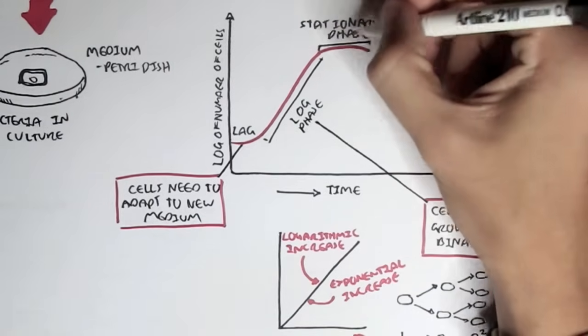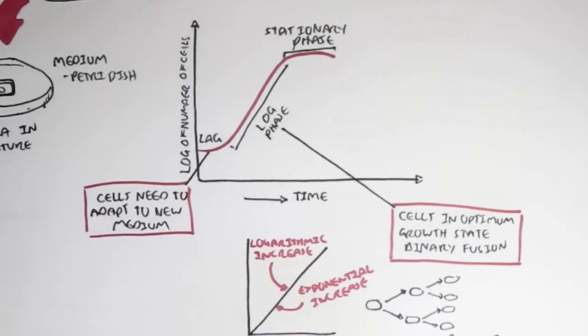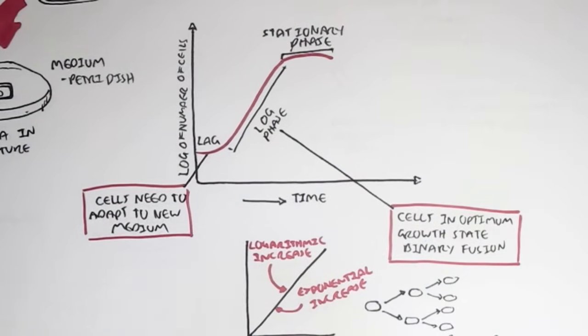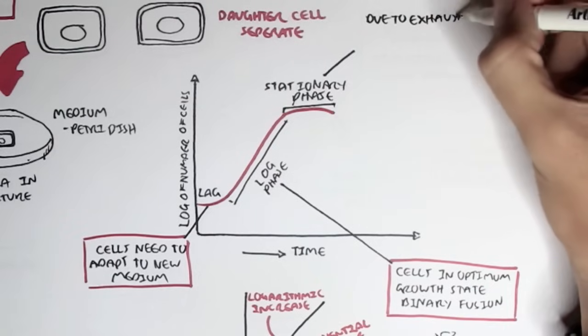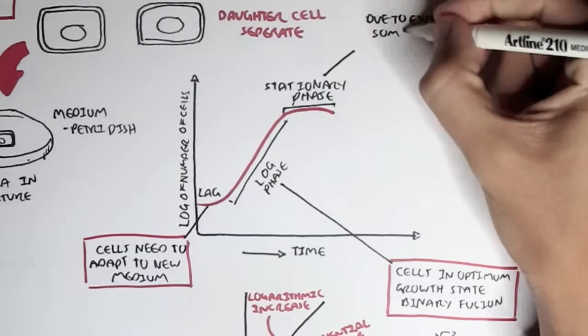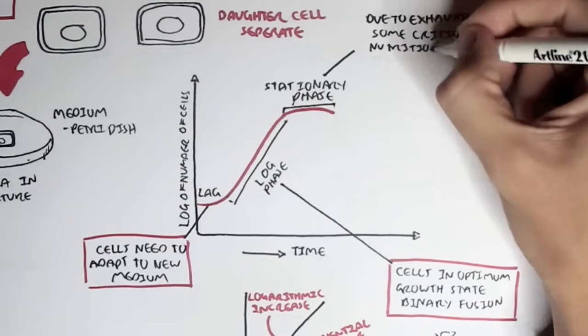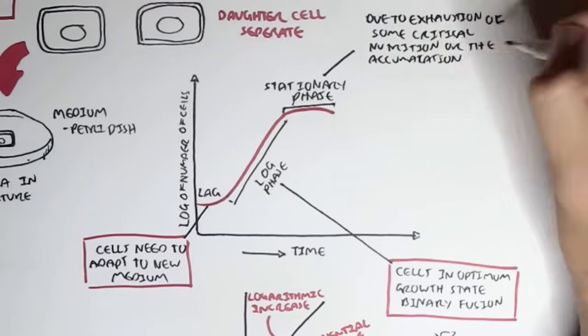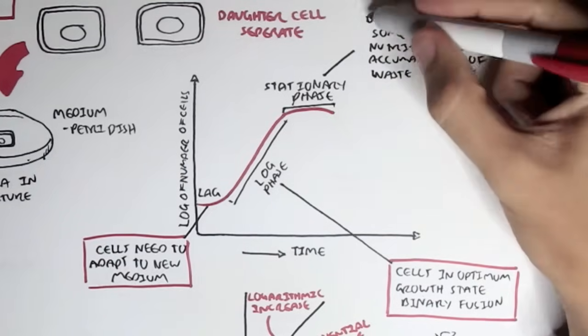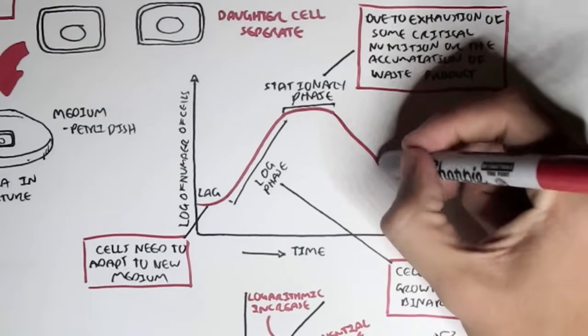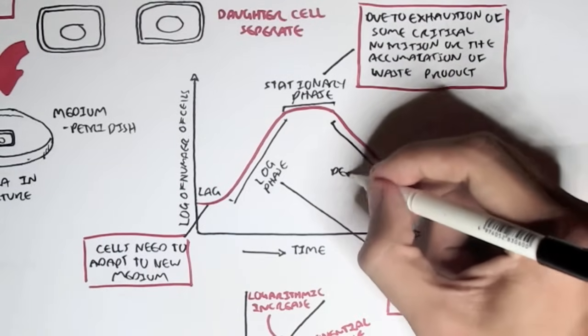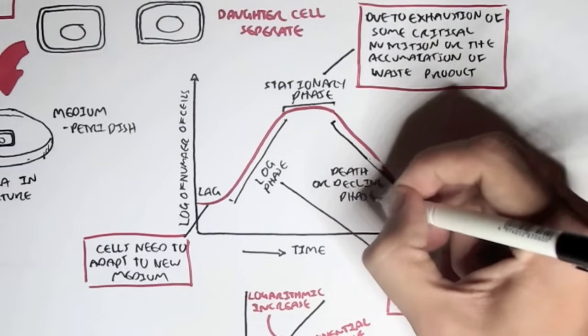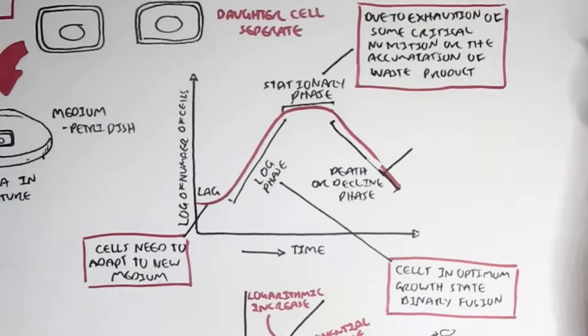After the log phase, we have the third phase, which is the stationary phase. As you can see, it just goes flat. The logarithmic number of cells doesn't increase. This is due to the exhaustion of some critical nutrition or the accumulation of waste product, which essentially slows or stops the growth of the bacteria in culture. Then after the stationary phase, we have the death or decline phase. This occurs through the continuation or accumulation of waste products or exposure to oxygen perhaps. In this phase, you can see that the number of bacteria decreases.